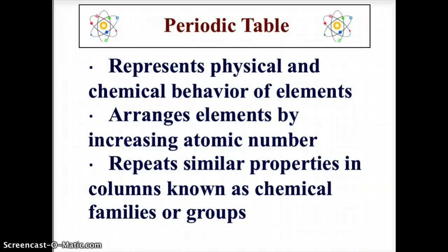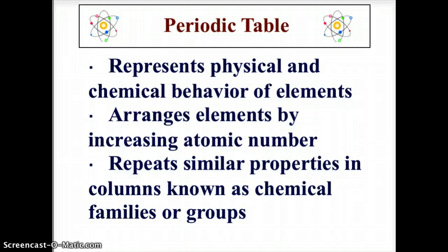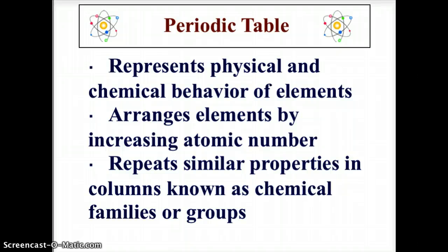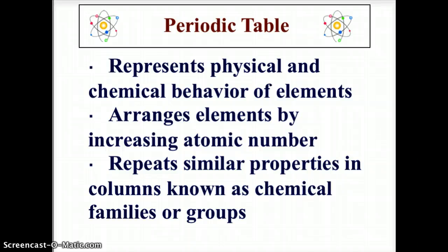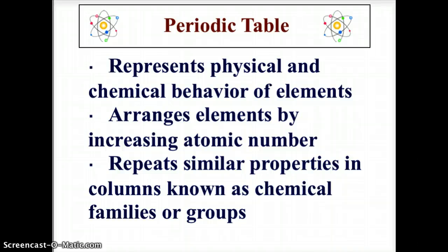The periodic table represents the physical and chemical behavior of the elements, arranged by atomic number — that is the number of protons in each element. It is a very distinct ordering, and because elements with very similar properties repeat, each column — known as a family or group — will have very similar characteristics.